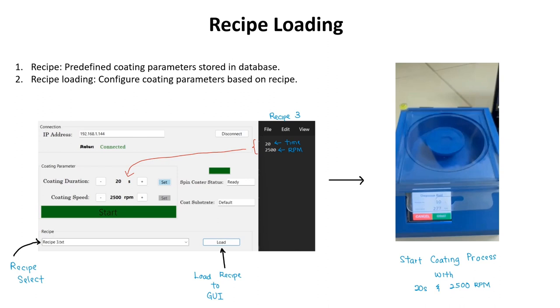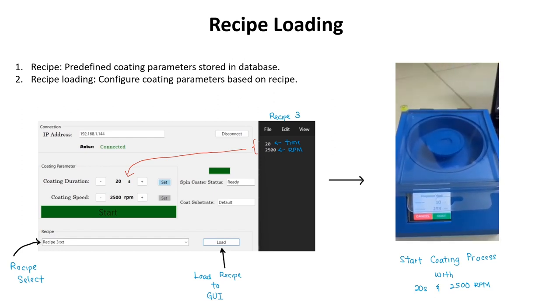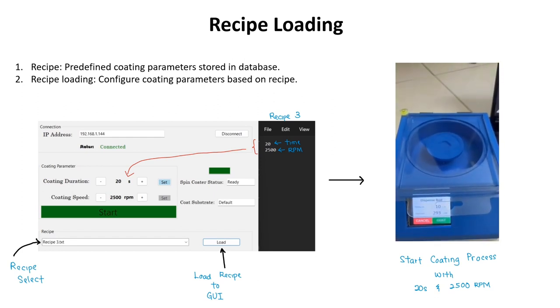Recipe loading is one of the features of the spin coat system. The recipe is a predefined coating parameter stored in the database. Here, recipe 3 was chosen and loaded into the system as shown in the GUI.